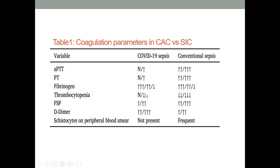Thrombocytopenia is also minimally affected in COVID-19 compared to DIC. We don't typically see the peripheral morphologic picture of fragmented red cells. Having done many peripheral morphology reviews of ICU patients, we don't usually see the standard manifestation of schistocytes as a sign of microangiopathy, even in patients with poor outcomes.